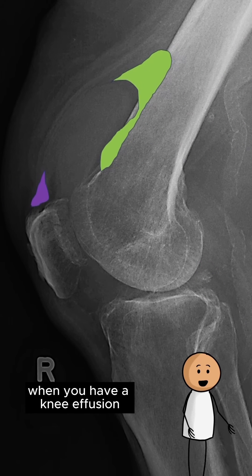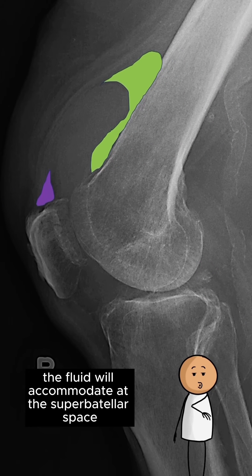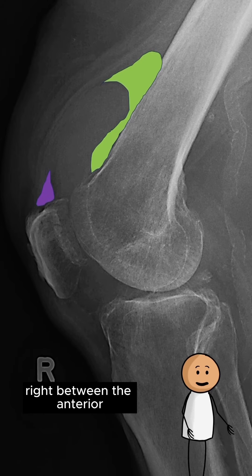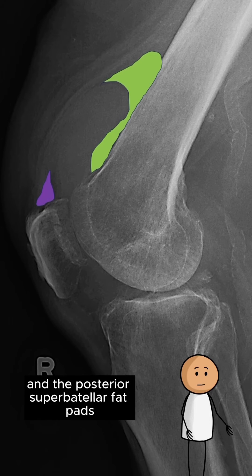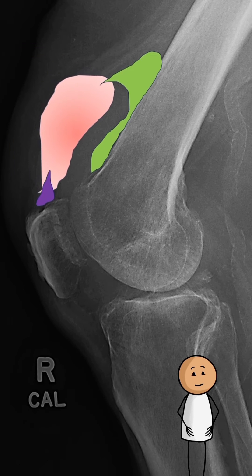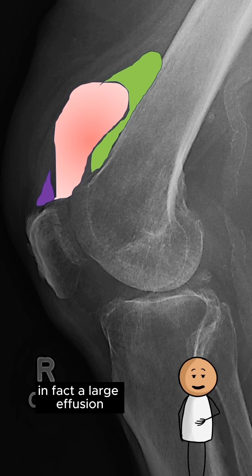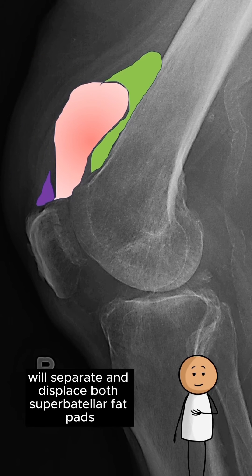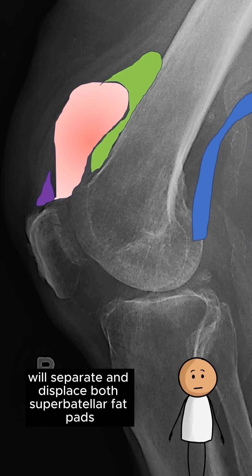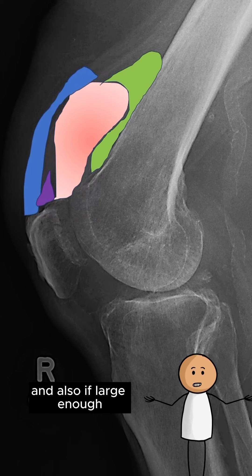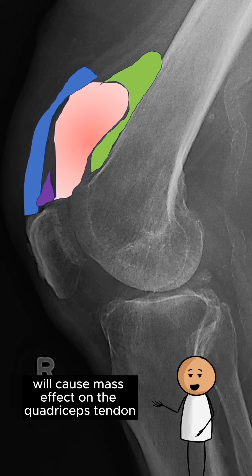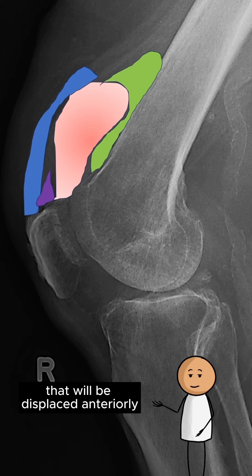When you have a knee effusion, the fluid will accumulate at the suprapatellar space right between the anterior and the posterior suprapatellar fat pads. A large effusion will separate and displace both suprapatellar fat pads, and if large enough, will cause mass effect on the quadriceps tendon, which would be displaced anteriorly.